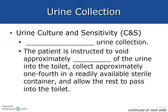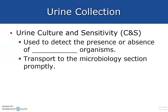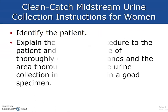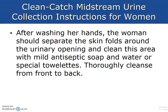Urine culture and sensitivity, also referred to as C&S, requires a midstream clean catch urine collection. The patient is instructed to void approximately two-thirds of the urine into the toilet, collect approximately one-fourth in a sterile container, and allow the rest to pass into the toilet. This eliminates bacterial components that could contaminate the specimen. It is used to detect the presence or absence of bacterial organisms, and the specimen should be transported to microbiology promptly. Instructions for women and men should be reviewed separately.